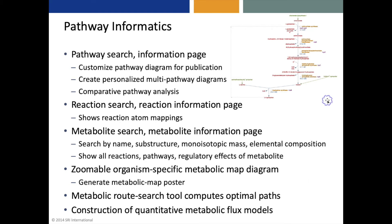There's also a reaction search capability and a reaction information page that shows reaction atom mappings. There is a metabolite search and metabolite information page with multiple different search criteria. The metabolite page shows all the reactions and pathways that a metabolite is involved in, as well as the regulatory effects of a metabolite. There's a zoomable organism-specific metabolic map diagram, and we can generate a metabolic map poster from that diagram. There's also a metabolic route search tool that computes optimal paths connecting a starting metabolite to an ending metabolite, and an ability to construct quantitative metabolic flux models.